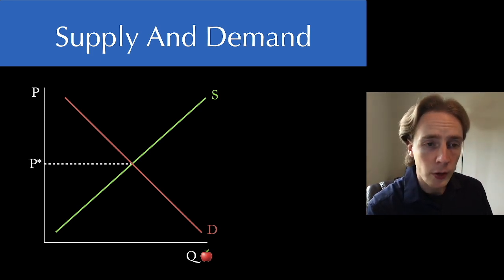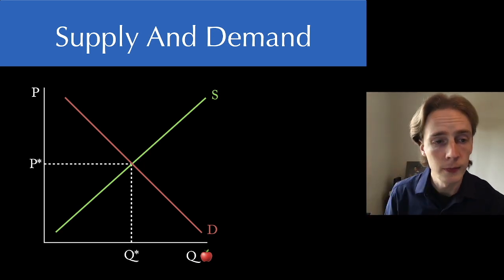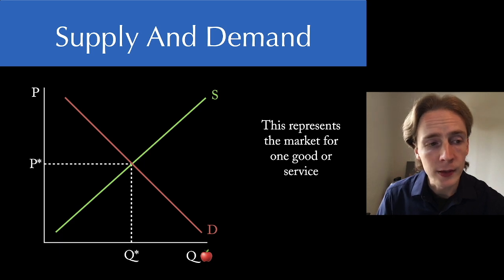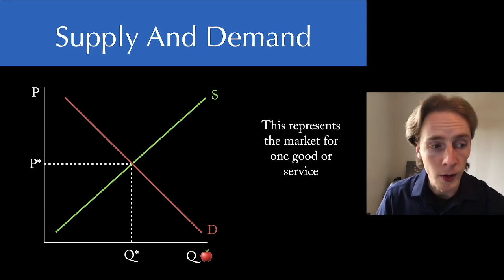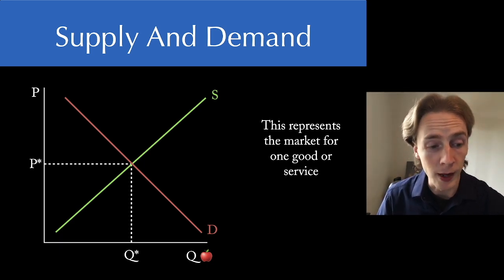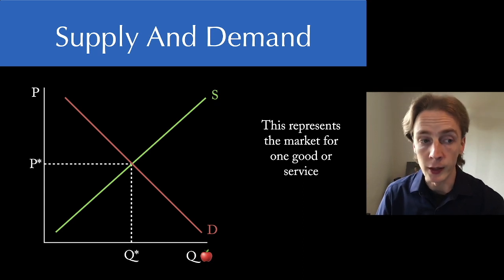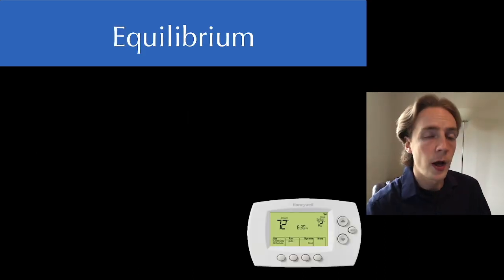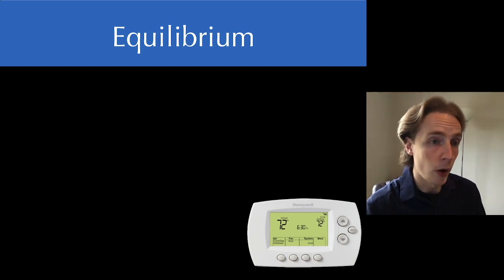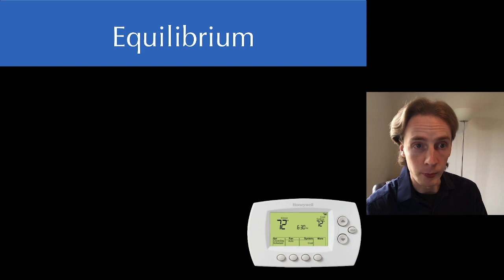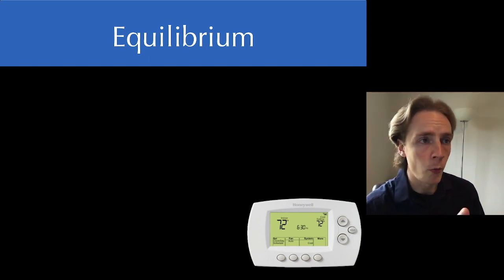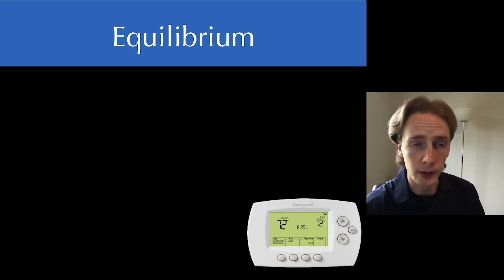Putting these two curves together gives us something called an equilibrium price and an equilibrium quantity. These are our two main descriptors of the market for apples. We now know something about the price of apples and the number of apples that get sold in a market. When we talk about equilibrium price and quantity, I don't want us to just look at the intersection point.